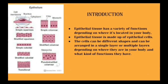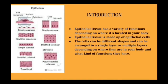Epithelium tissue has a variety of functions depending on where it is located in the body. It is made up of epithelial cells of different shapes, arranged in single or multiple layers depending on the function being performed. Each epithelial cell has a cell membrane, a nucleus, and cytoplasm. They can be arranged as simple squamous or simple columnar with cilia or microvilli on top, then stratified squamous, simple cuboidal, stratified cuboidal, transitional, stratified columnar, and pseudo-stratified columnar.